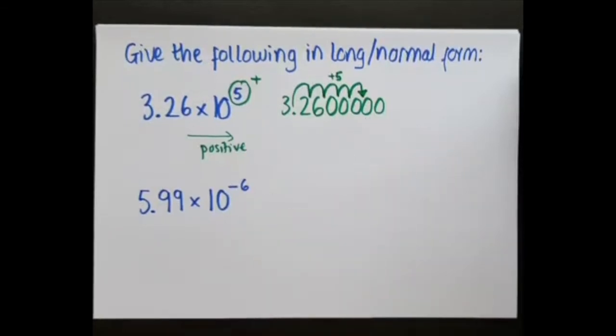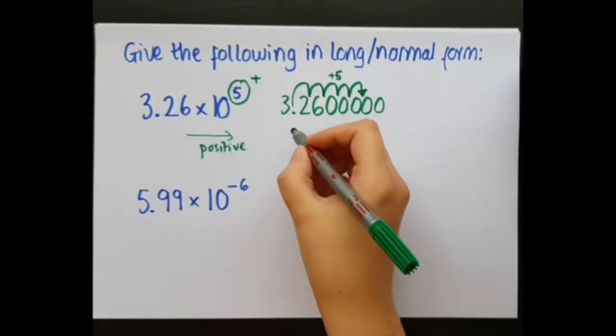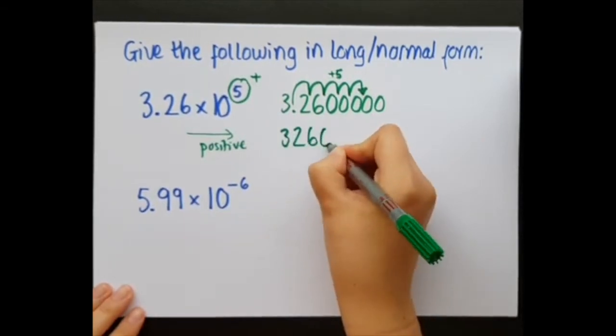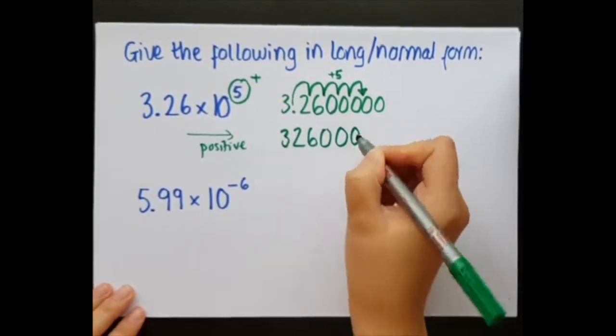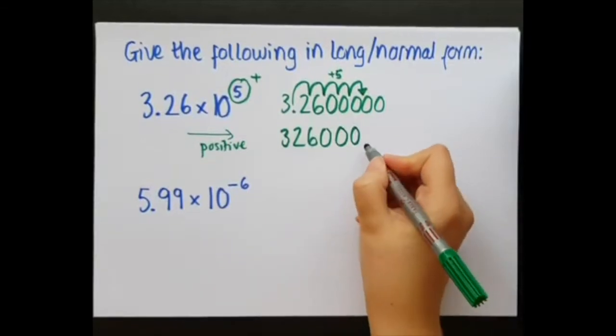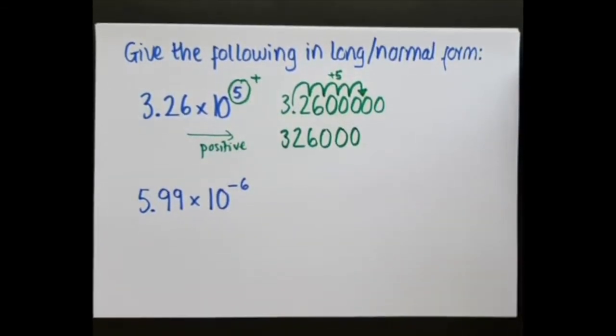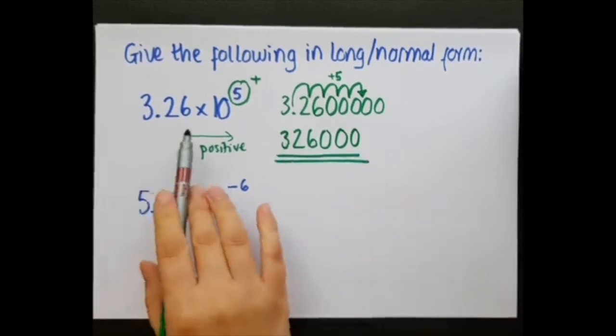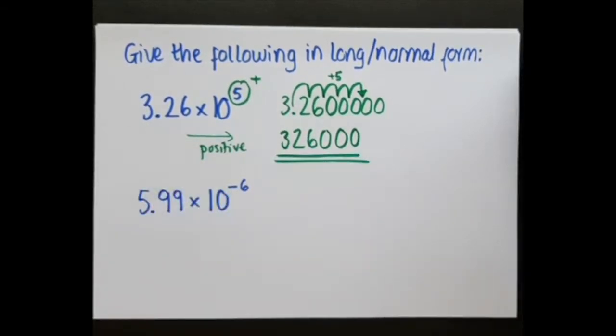And now I can rewrite this number with the decimal place in the correct place. So that is three, two, six, zero, zero, zero. And I could put the decimal point there, but it's kind of standard not to. But that is my long normal form for 3.26 times 10 to the power of 5. So we have taken a standard form number and made it a big number.